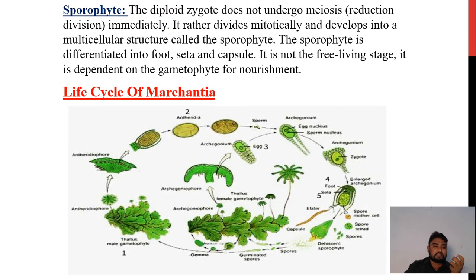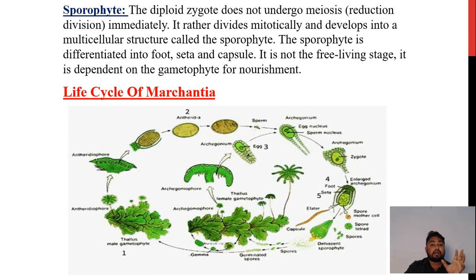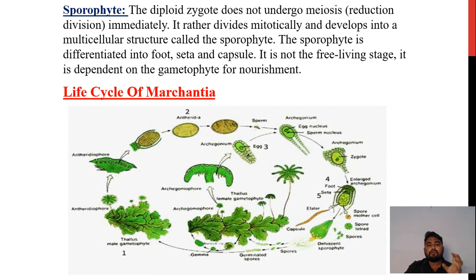Regarding the sporophyte: the diploid cell does not undergo meiosis immediately. It rather divides mitotically and develops into a multicellular structure called the sporophyte. The sporophyte is differentiated into a foot, seta and capsule. It is not a free-living stage; it depends on the gametophyte for nourishment. This is the life cycle of Marchantia.